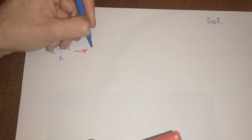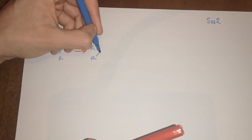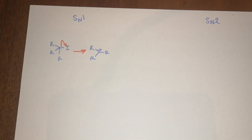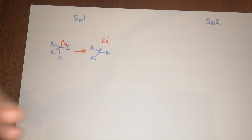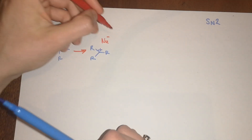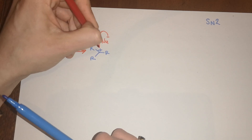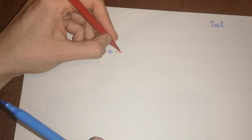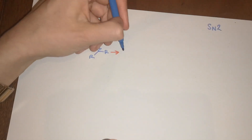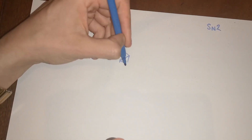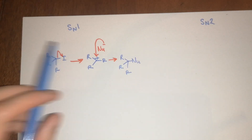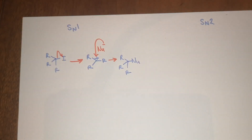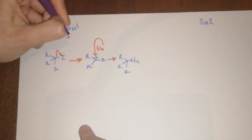So then what you end up with is a carbocation — that's a positively charged carbon — and a nucleophile will come in. That's any Nu⁻, so that could be lots of different things such as an amine or an alkoxide, and the electrons of the nucleophile will attack that positively charged carbon and you will form a new bond with your nucleophile. The important thing about SN1 reactions is that they are stepwise.